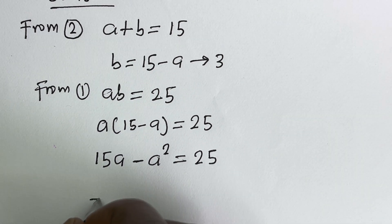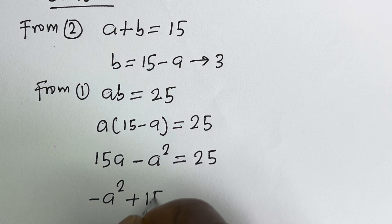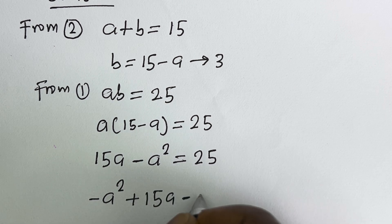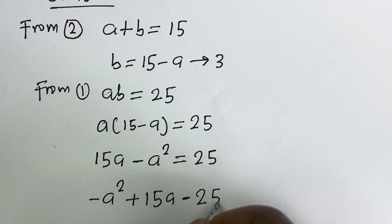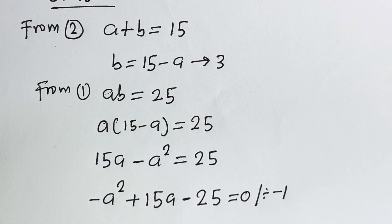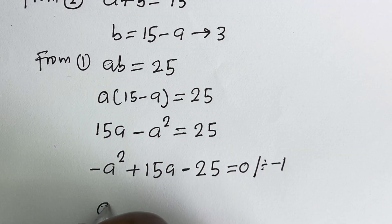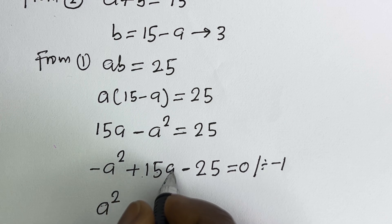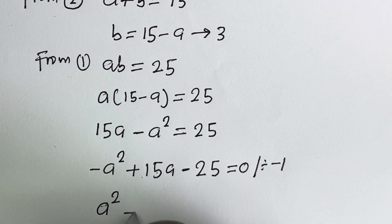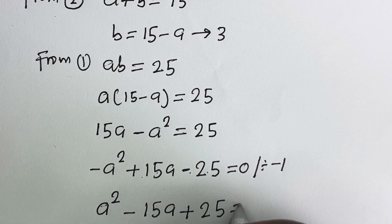We have minus a squared plus 15a minus 25 equals 0. Dividing all terms by minus 1 gives us a squared minus 15a plus 25 equals 0.